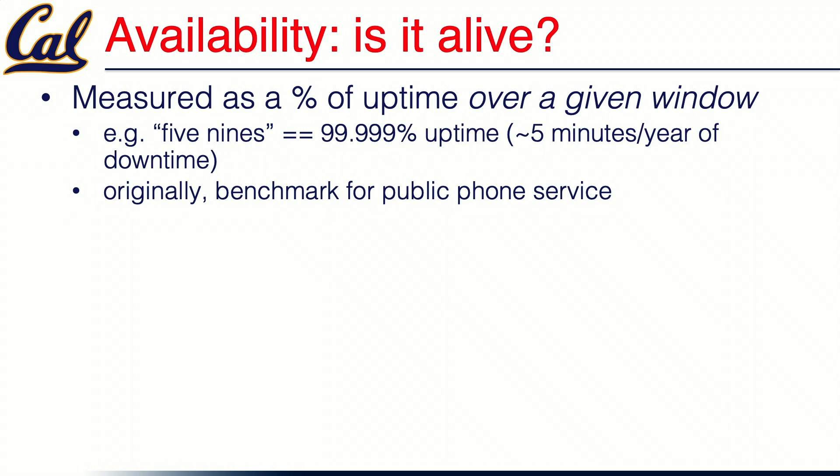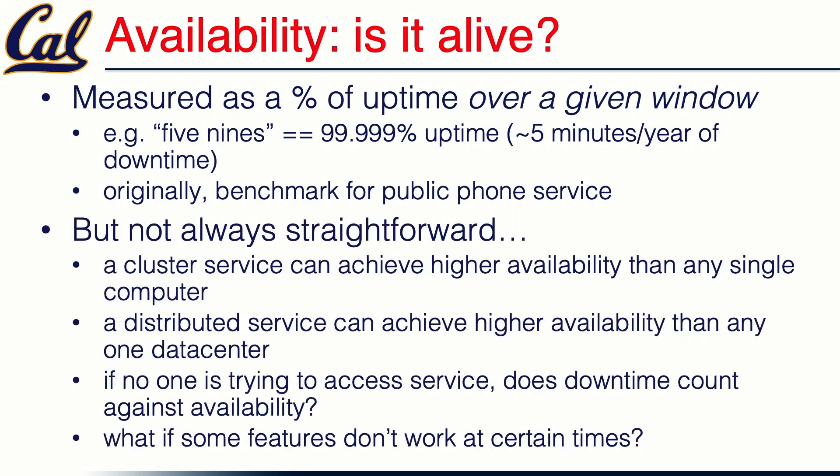Even with three nines, it's not always straightforward for SaaS developers to crisply characterize what availability means. For the phone service, availability was very simple — there was only one thing you could do: pick up the phone and call another person. But if you have a web app, it probably has a lot of behaviors.